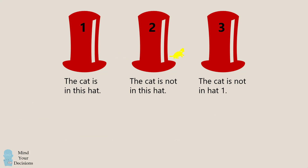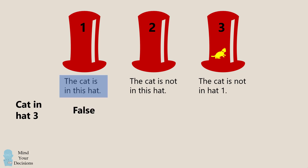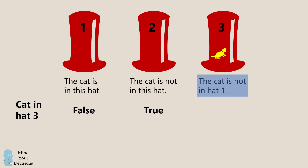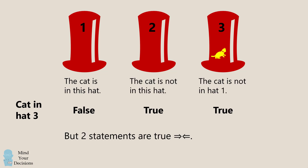Let's now suppose the cat is in hat 3. We will evaluate each of the statements. The first statement will be false. The second statement will be true. But the third statement will also be true. Once again, we have two statements that are true, which means this cannot be the answer.